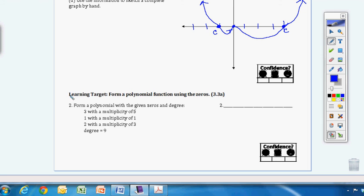All right. For number two, the learning target here is to form a polynomial function using the zeros. So now we are given everything. We just need to actually put that into function form.